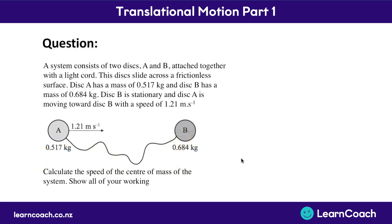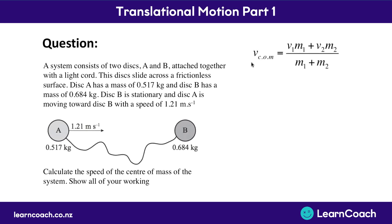So that's translational motion — let's look at a question now. Here we've got a system with two discs, A and B, attached together with a light cord, so the weight's insignificant. They're going to slide across a frictionless surface. Disc A has a mass of 0.517 kg and is going along at 1.21 meters per second. Disc B is stationary and has a mass of 0.684 kg. We need to calculate the speed of the center of mass of the system and show our working.